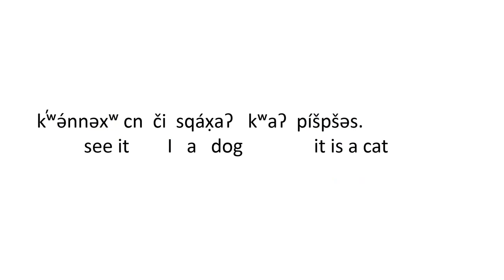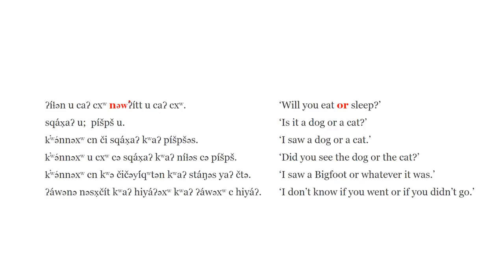The next model is essentially the same as the first qua model, aside from the main verb and the fact that it is questioned. It differs only in the use of the focus pronoun niche after the qua. This is a very common kind of or question. A more literal translation might be: do you want the dog, or is it the cat? The niche corresponds to the is it.